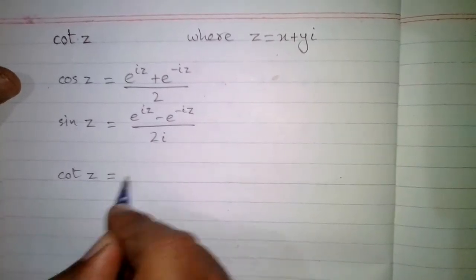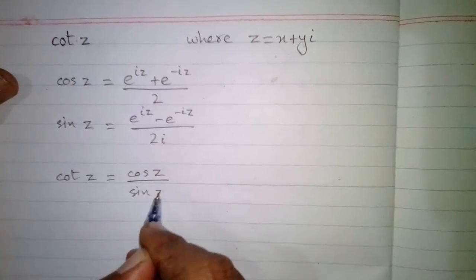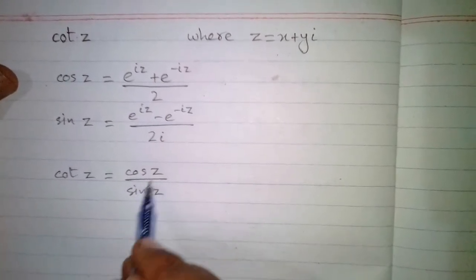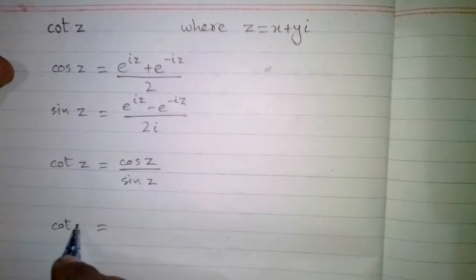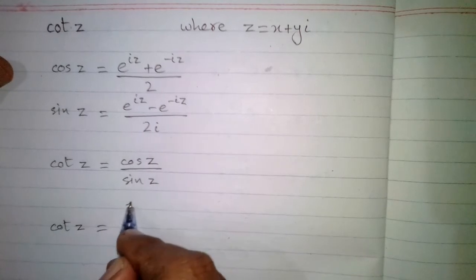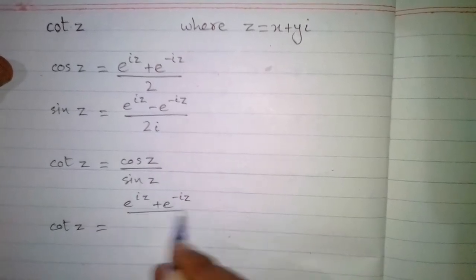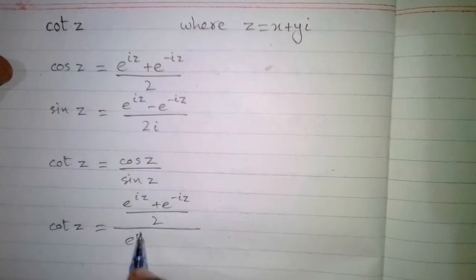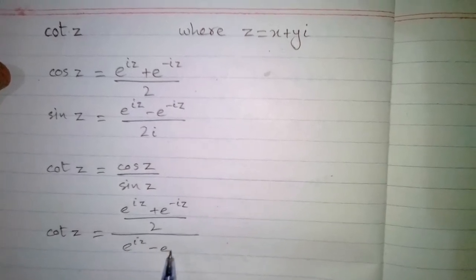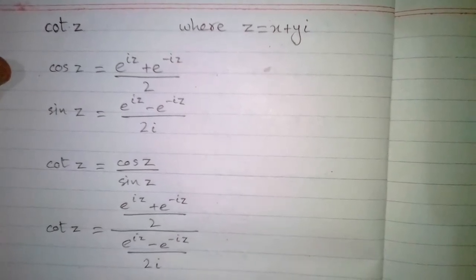Now, cotangent of z is equal to cosine of z upon sine of z. Substituting the values of cosine of z and sine of z, we have cotangent of z equal to e to the power iota z plus e to the power minus iota z upon 2, over e to the power iota z minus e to the power minus iota z upon 2 iota.